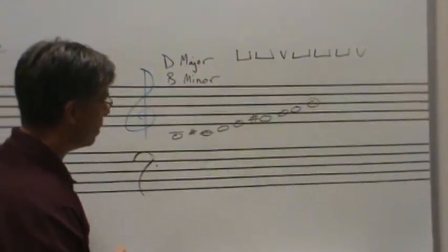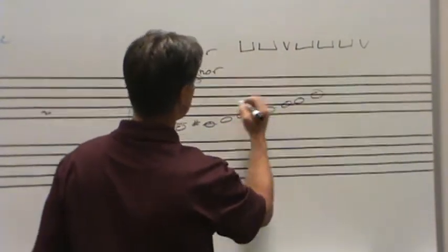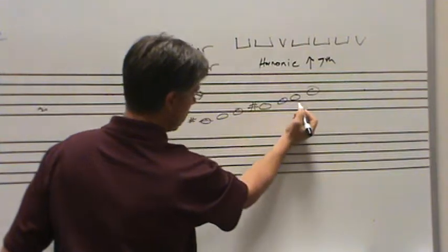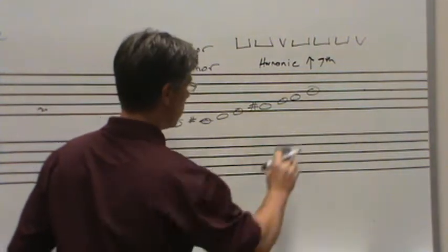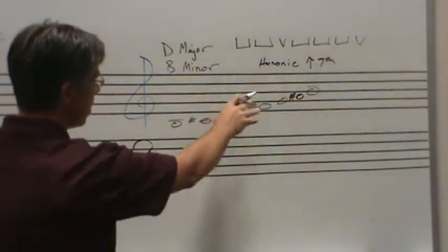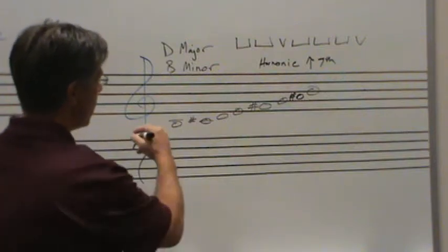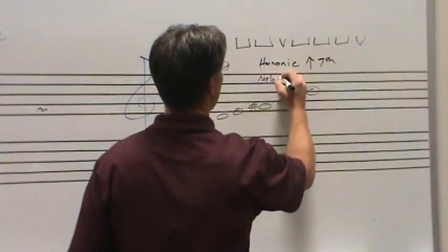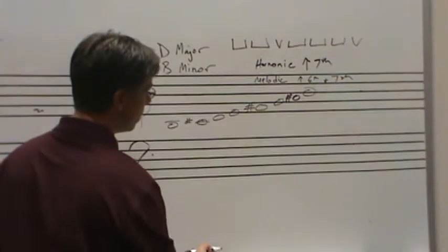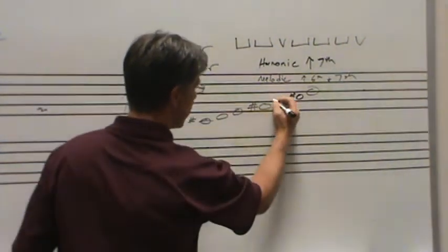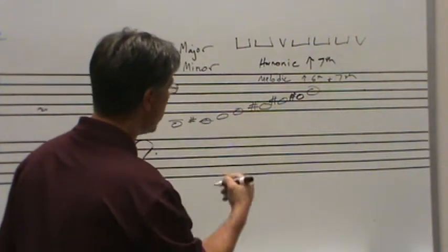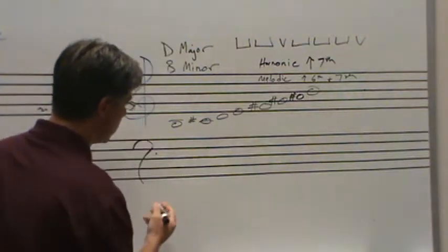Let me rewrite that just a little bit nicer so it's a little clearer. B, C sharp, D, E, F sharp, G, A, B, B natural minor. Our harmonic minor will have a raised seventh step. So we'll take that A and we'll turn it into an A sharp, giving us a B harmonic minor. And then a B melodic minor has a raised sixth and seventh step ascending. So on the way up, we'll raise that sixth step as well, F sharp, G sharp, A sharp, B.